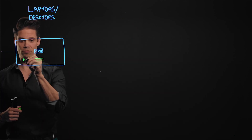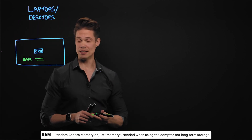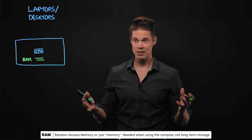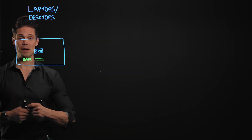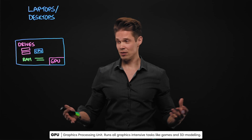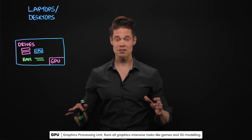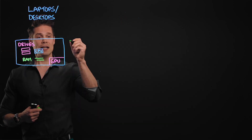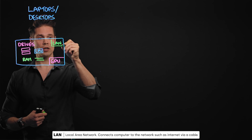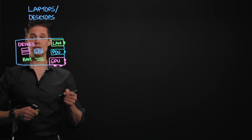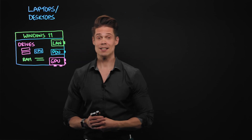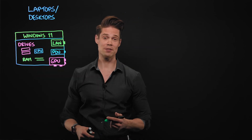Then there's memory — something we call RAM, or Random Access Memory. This is the memory we use on the fly when we're doing something, like opening a Word document or browsing the internet. Then there's another kind of memory: drives where we store long-term data. There's also the graphics card, used for 3D modeling, gaming, video editing, and more and more these days, artificial intelligence tasks. We also need a network adapter, such as a local area network adapter. And of course an operating system — Windows, Linux, Mac OS — and on top of that, applications.